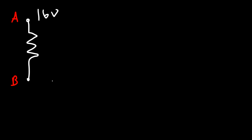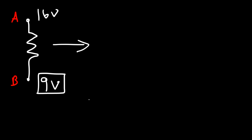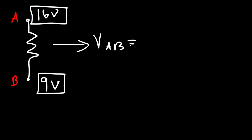Let's go over some questions. We have a resistor with point A and point B. The electric potential at point A is 16 volts and at point B is 9 volts. What is the voltage across the resistor? Make sure you understand the difference: electric potential is the potential at a single point, but voltage describes the potential difference between two points. The potential difference is 16 minus 9, which is 7 volts.